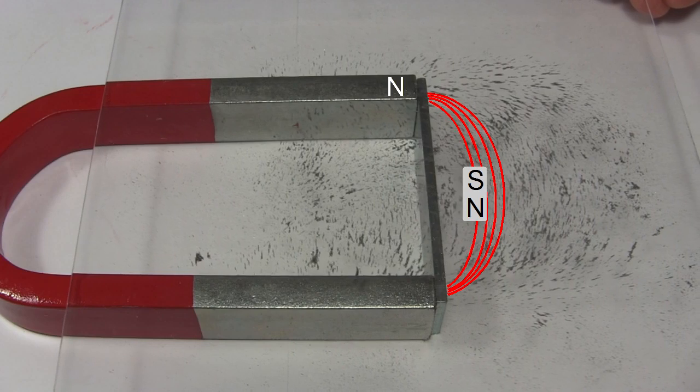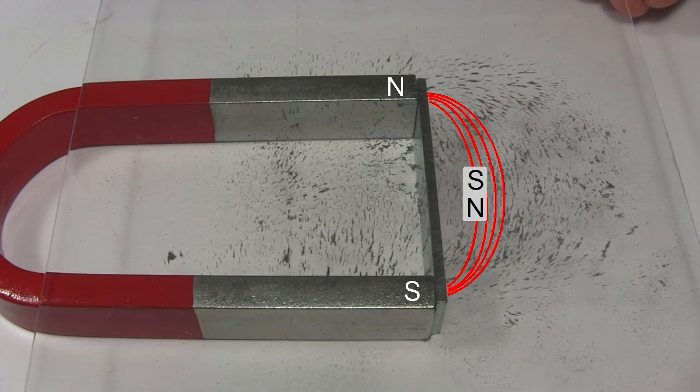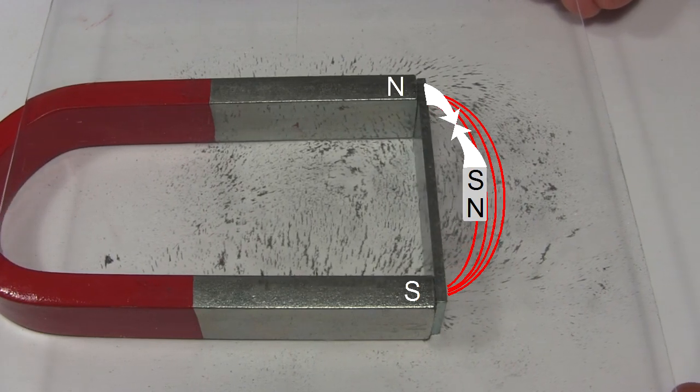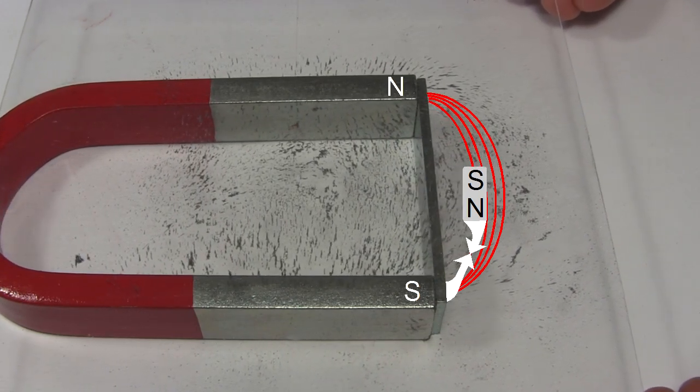One of the legs of the horseshoe magnet is the north pole, and the other leg is the south pole. So the little magnets, that is the filings, line up with their south pole attracted to the north leg, and their north pole attracted to the south leg.